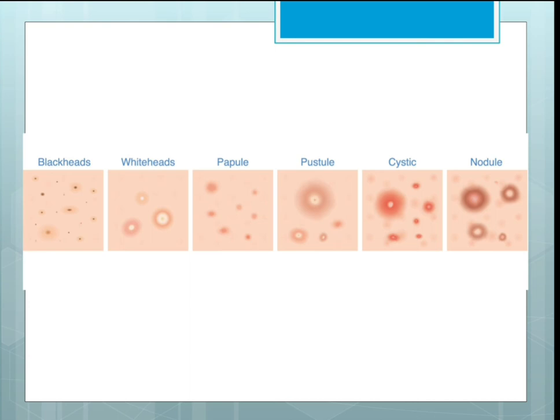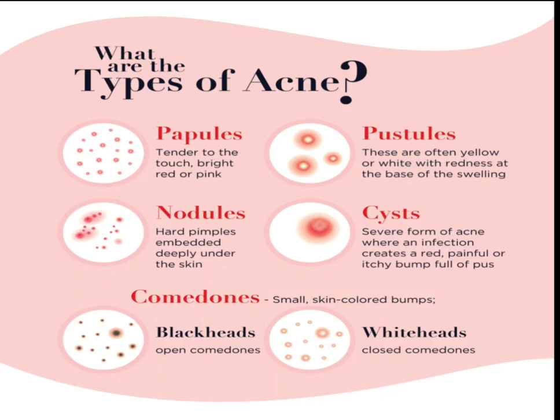The types of acne include: blackheads and whiteheads (comedones), papules which tend to be bright red or pink, nodules which are hard pimples embedded deeply under the skin, blackheads which are open comedones and whiteheads which are closed comedones, pustules which are often yellow or white with redness at the base, and cysts — the severe form of acne where infection creates a red, painful, or itchy bump full of pus.